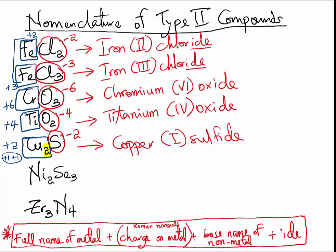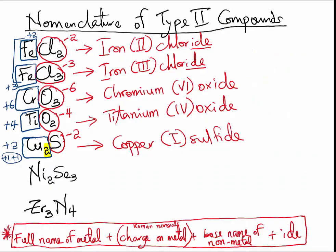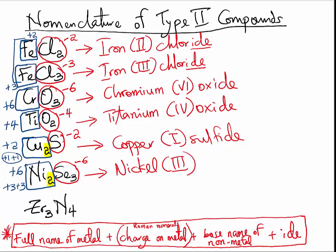Let us name the next one: Ni₂Se₃. As usual, we begin from the non-metal. Selenium is from group 6A, so it has a charge of minus 2. The total negative will be negative 6 since there are 3 selenium atoms, which means the total positive must also be positive 6. However, we have 2 nickel atoms giving us a charge of plus 6, so each nickel will be plus 3. Therefore the name of Ni₂Se₃ will be Nickel(III) selenide.